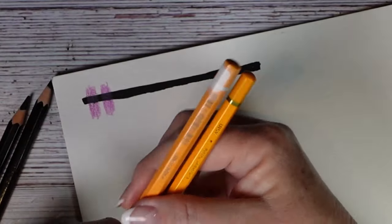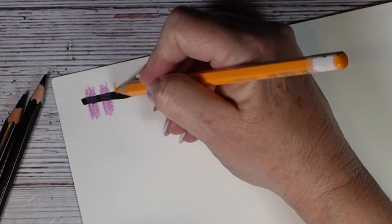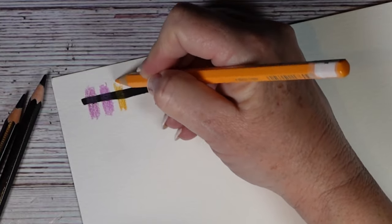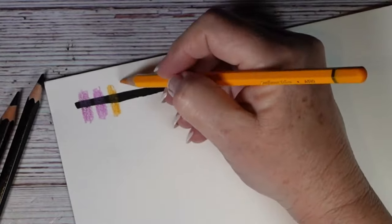So I am going to do the same thing with each color. I will do the Albrecht Durer first and then the Artisto.